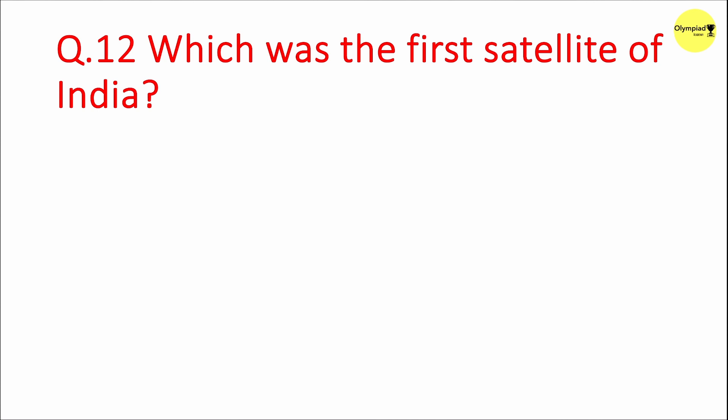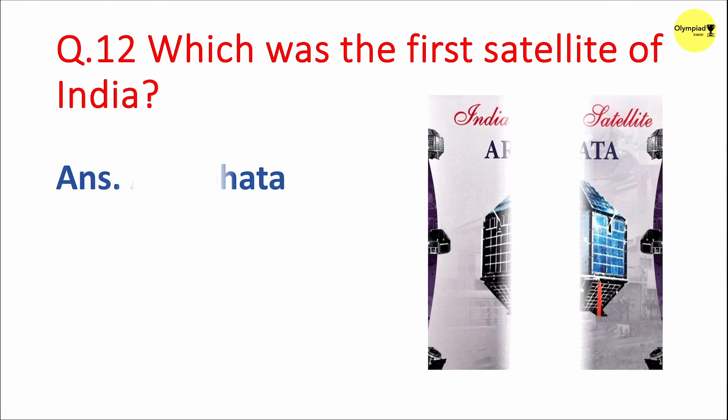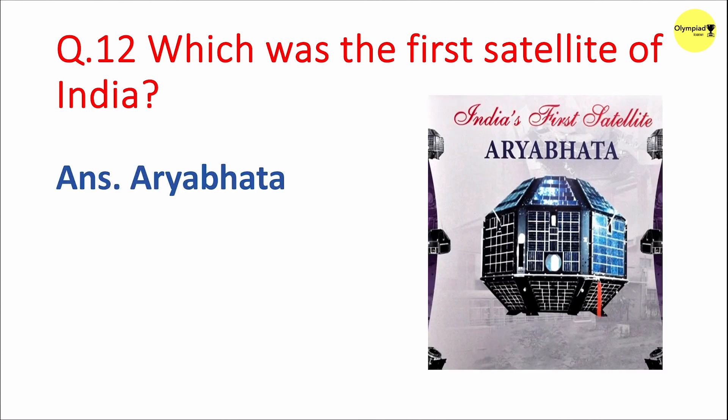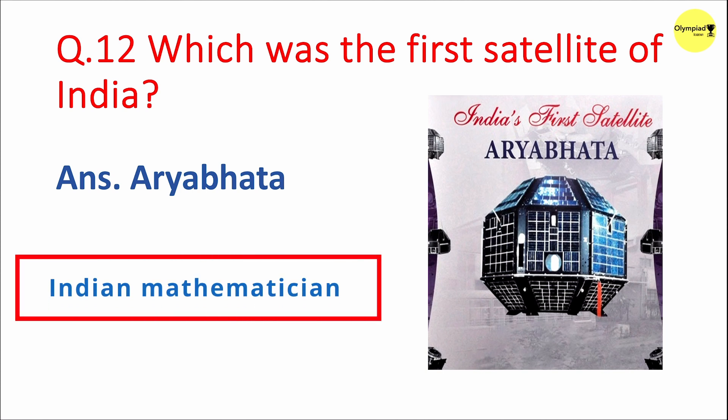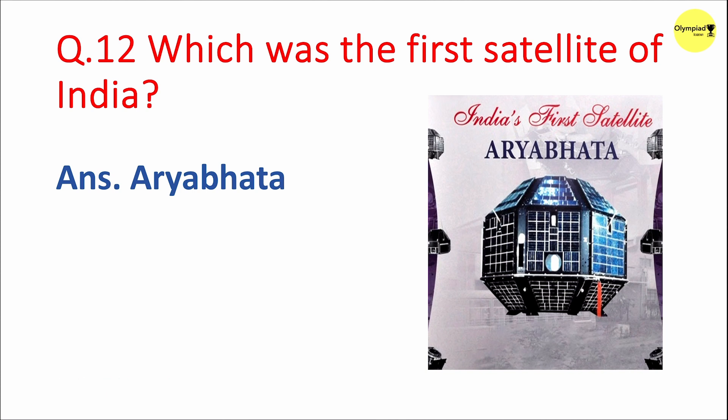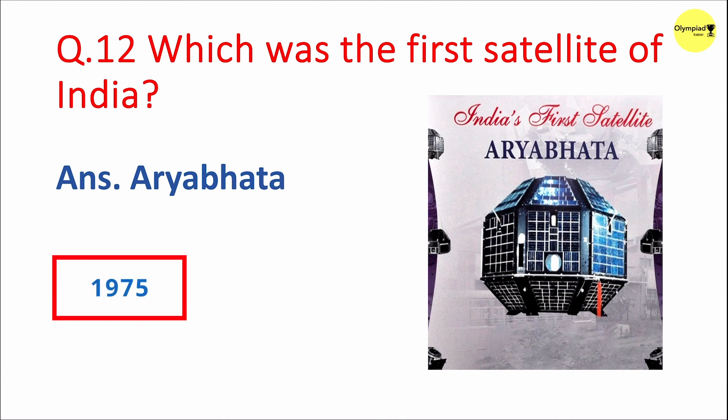Question 12: Which was the first satellite of India? Answer: Aryabhata. It was named after the ancient Indian mathematician and astronomer Aryabhata. Aryabhata was launched into space in 1975.